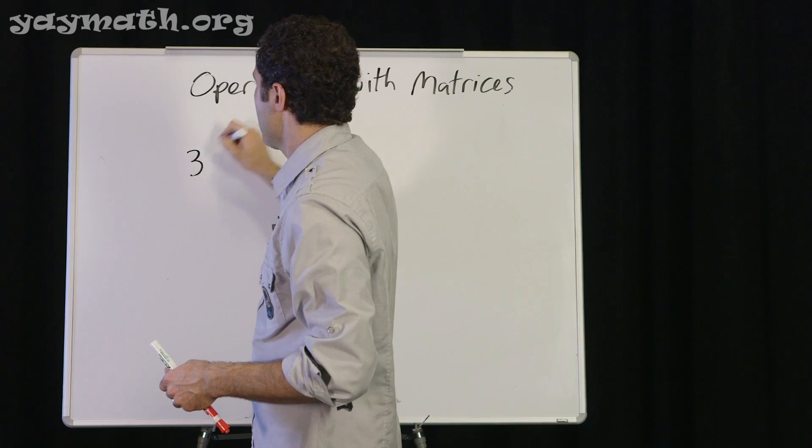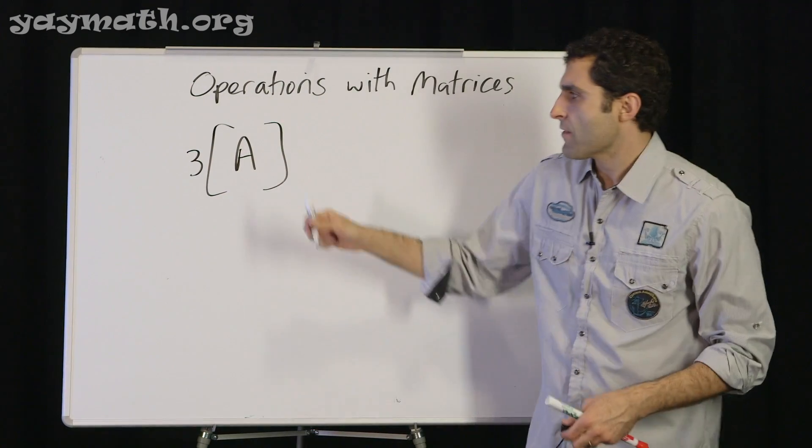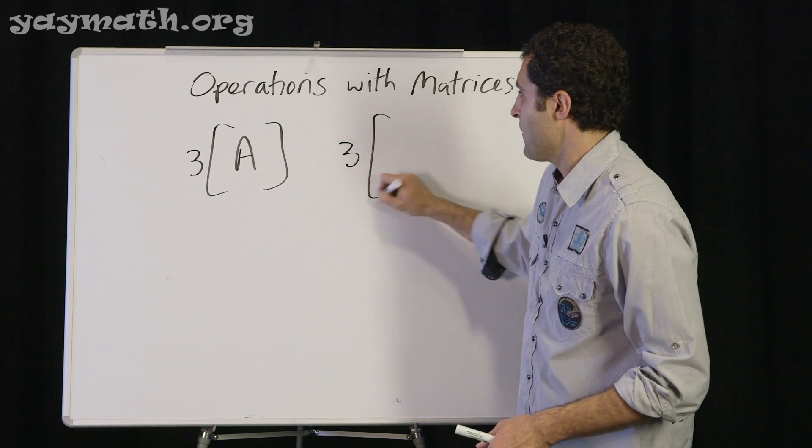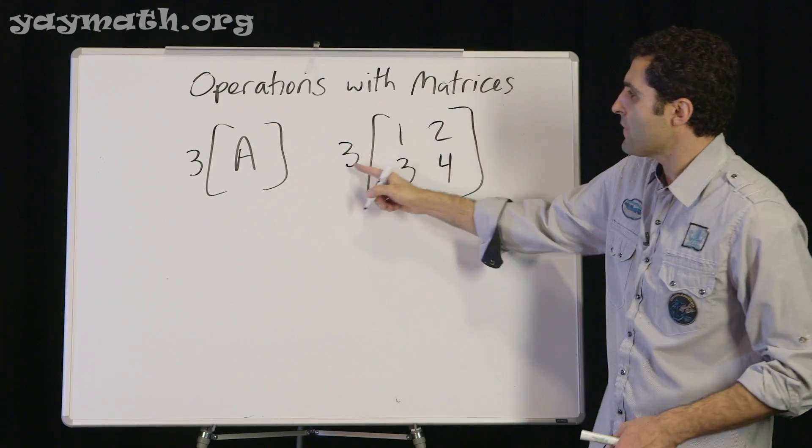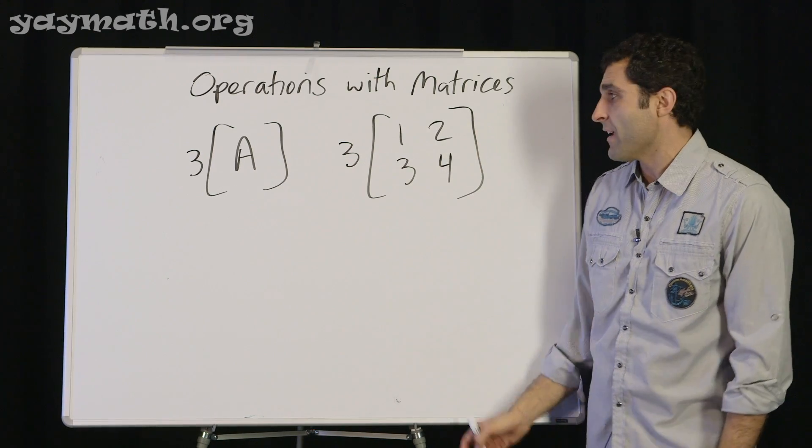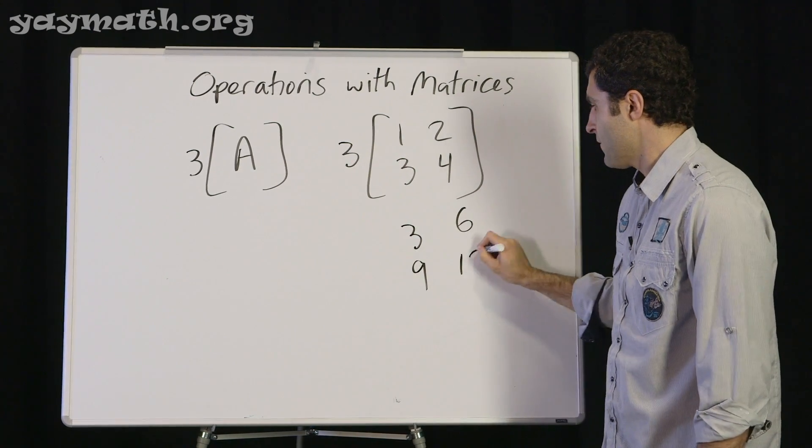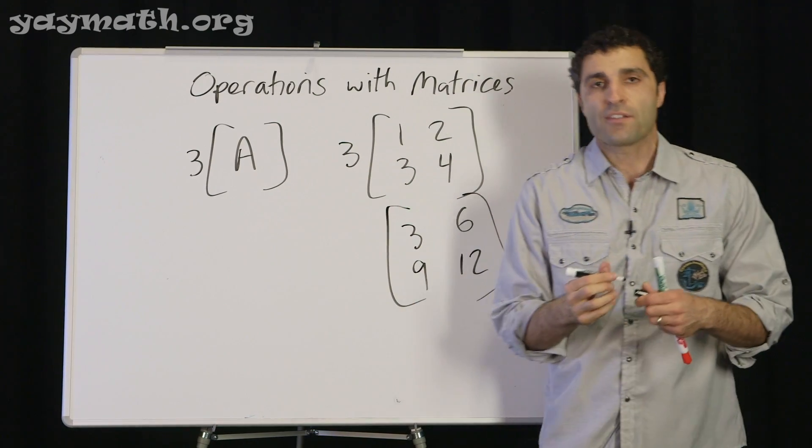Even something like this. Whatever matrix A is, three would distribute to every single term. So if you have your matrix A, we call it one, two, three, four to make it simple. Just again, intuitively, the three would apply to everything inside there. That's three, six, nine, twelve. That's the result of multiplying matrix A by a certain scalar three.